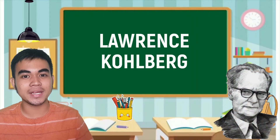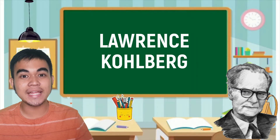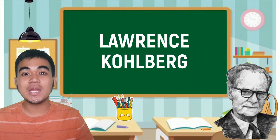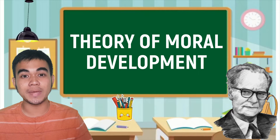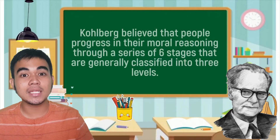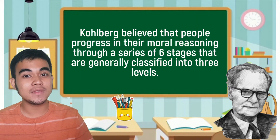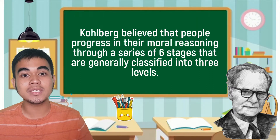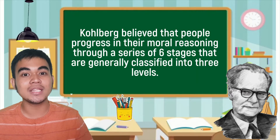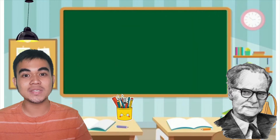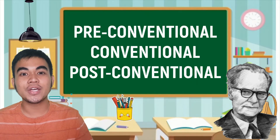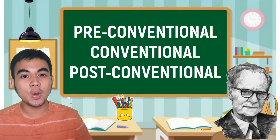To start with, let me share to you some facts about the main proponent of this theory. His name is Lawrence Kohlberg. Lawrence Kohlberg was a professor at Harvard University, well-known for his theory of moral development, where he believed that people progressed in their moral reasoning through a series of stages. He believed that there are six identifiable stages that are generally classified into three levels: the pre-conventional level, the conventional level, and the post-conventional level.